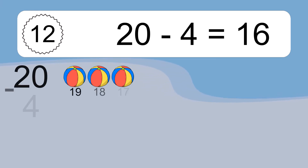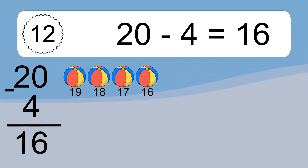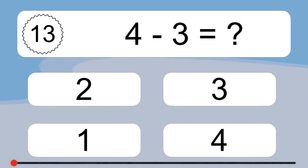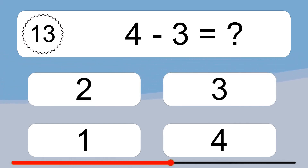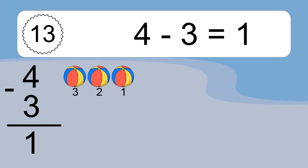20 minus 4 equals 16. Let's count it: 19, 18, 17, 16. 4 minus 3 equals what? 4 minus 3 equals 1. Let's count it: 3, 2, 1.